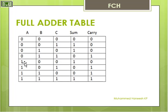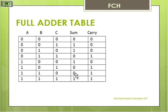Then 1, 0, 0: Sum is equal to 1, Carry is equal to 0. 1, 0, 1: Sum is equal to 0, Carry is equal to 1. 1, 1, 0: Sum is equal to 0, Carry is equal to 1. 1, 1, 1: Sum is equal to 1, Carry is equal to 1.